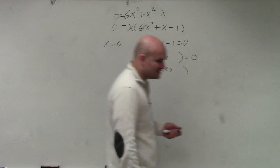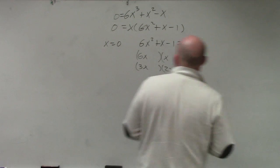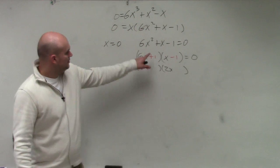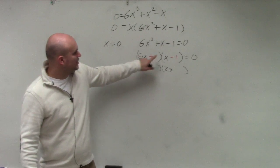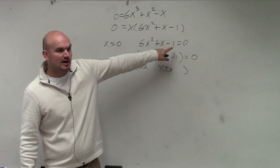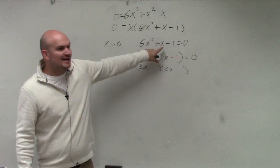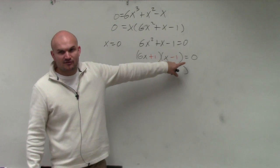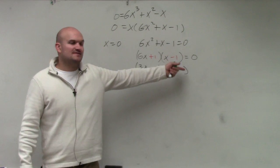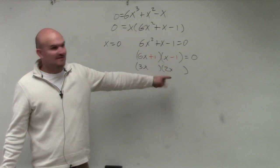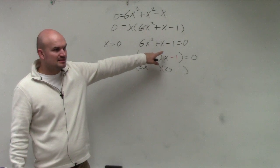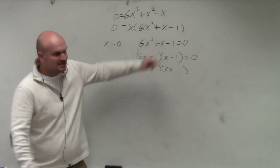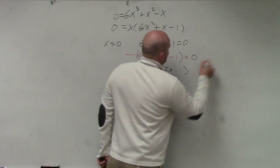Let's try 6x and x with plus 1 and minus 1. We know 6x times x gives you the first term, and plus 1 times minus 1 gives you the last term. But do the middle terms add to give you x? 1 times x is 1x, and 6x times negative 1 is negative 6x. Negative 6x plus 1x gives you negative 5x — that's not x. And switching the signs won't give me positive 1x either. So that factor doesn't work.